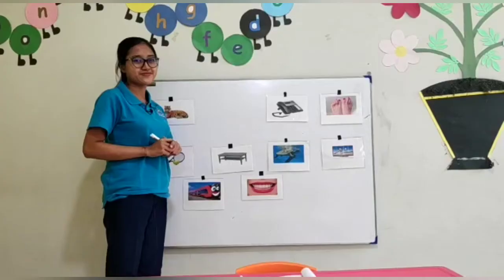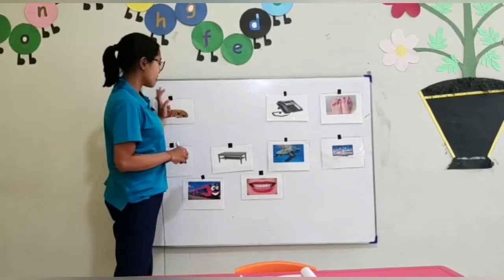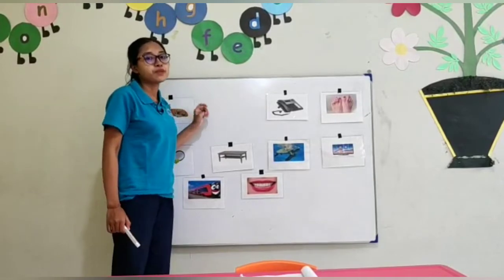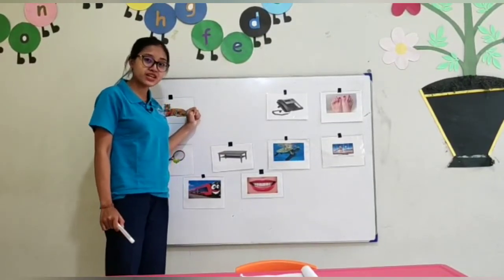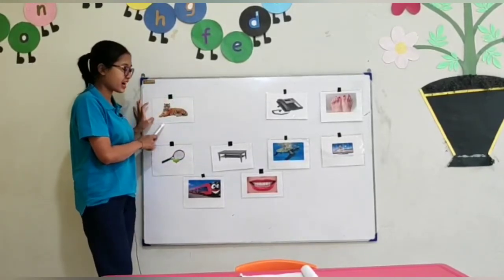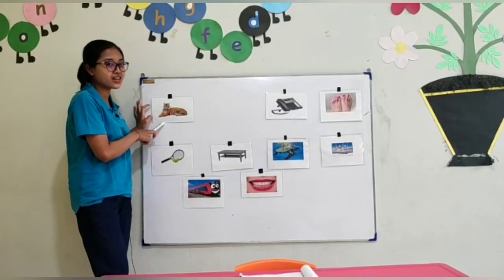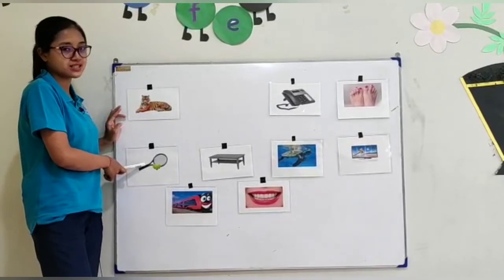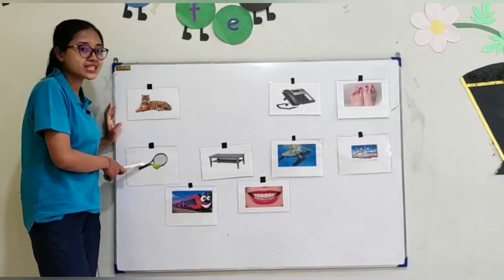So let us learn. Can you see there are so many pictures on the board? For the first one, let us mention the name of the picture. Are you ready? Do you know what picture is this? This is tiger — good! How about this one? This is tennis. Can you repeat after me? Tennis — good!